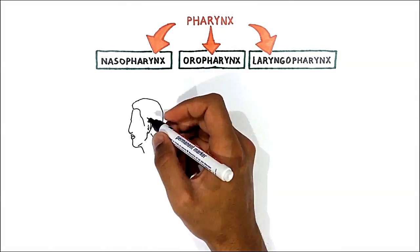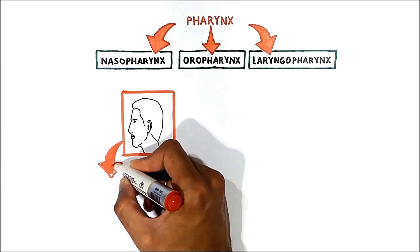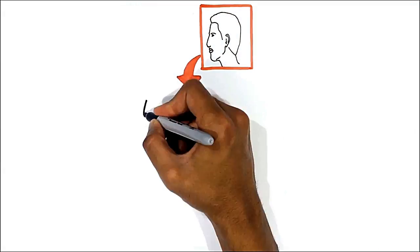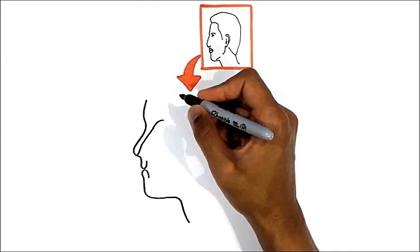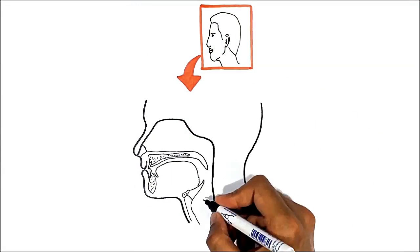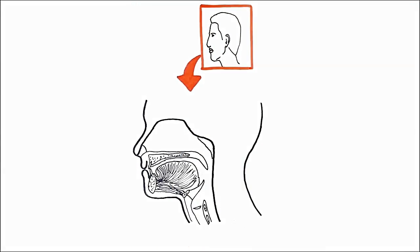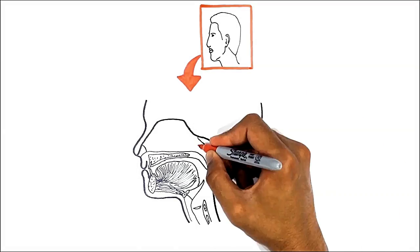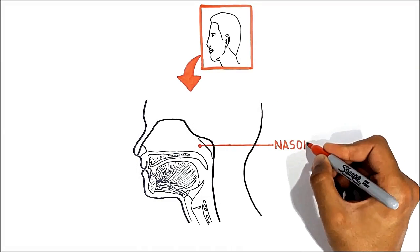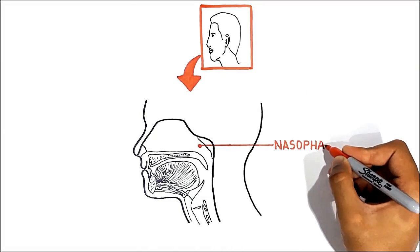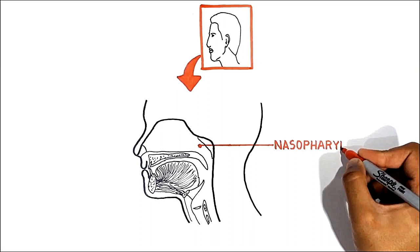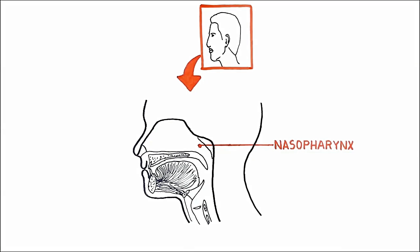All of these can be seen clearly in a sagittal section of the head and neck. The upper portion of the pharynx, the nasopharynx, lies above the oral cavity, and is actually a continuation of the nasal cavity, functioning only in respiration.